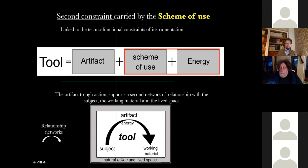Now the second constraints carried by the scheme of use, linked to the techno-functional constraints of instrumentation. In this case, the artifact, through actions, supports a second network of relationship with the subject, the working material, and the life space. Imagine you want to buy, to choose. It's evidently the choice is to work. Often you forget that. And we have a problem because you buy an artifact, but you don't buy the tool.